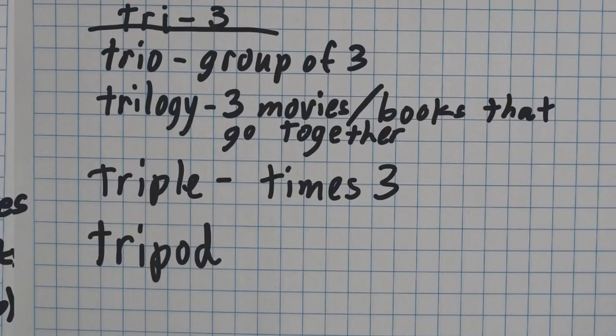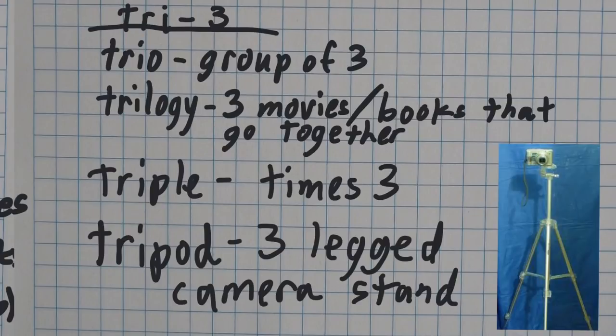And then finally, tripod. What is a tripod? A tripod is a three-legged camera stand. You can see one, two, three legs. You put your camera on top of it. That is called a tripod.